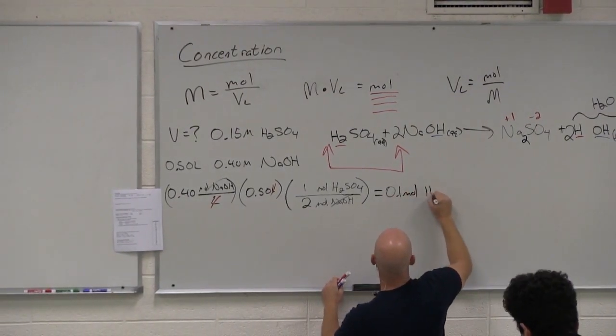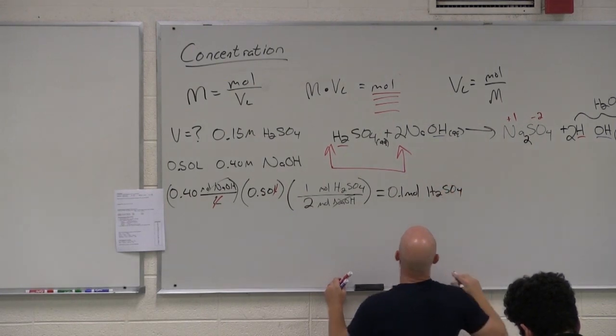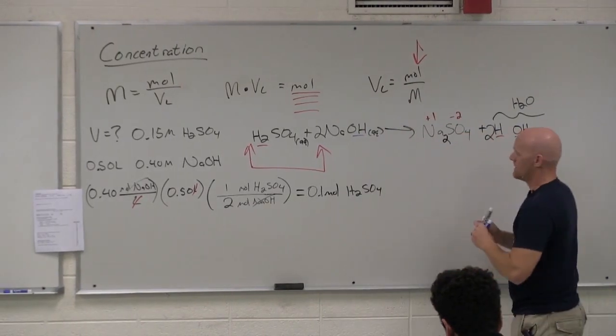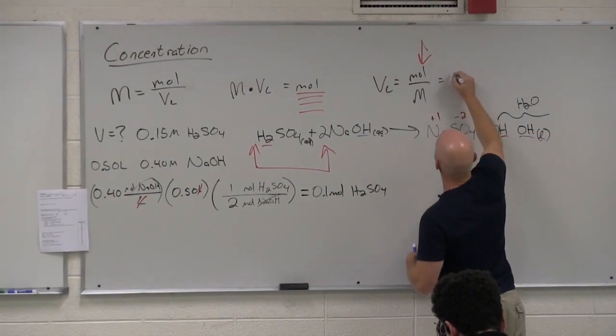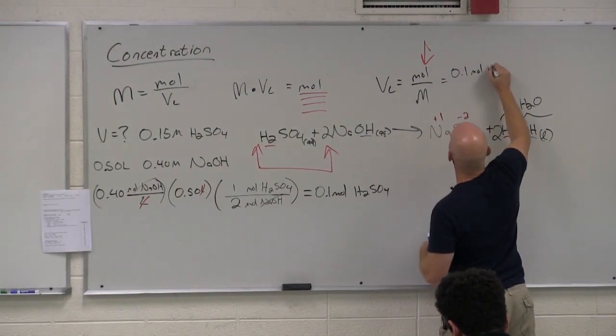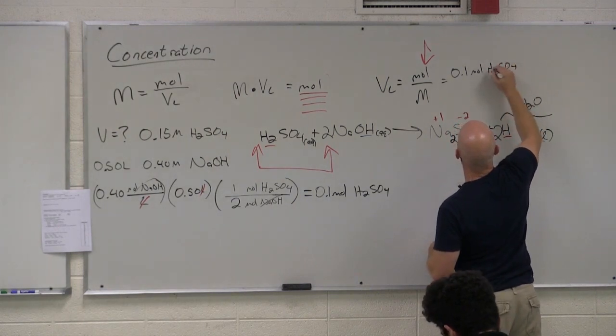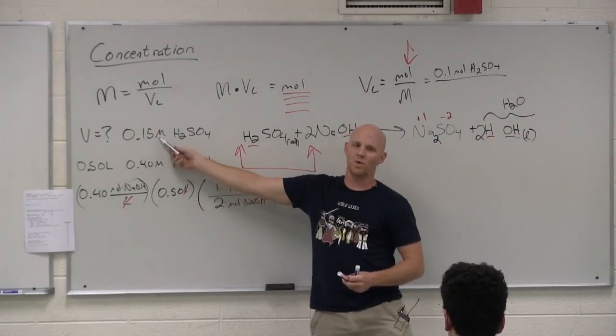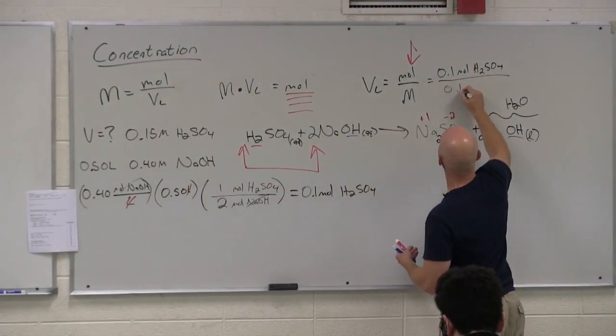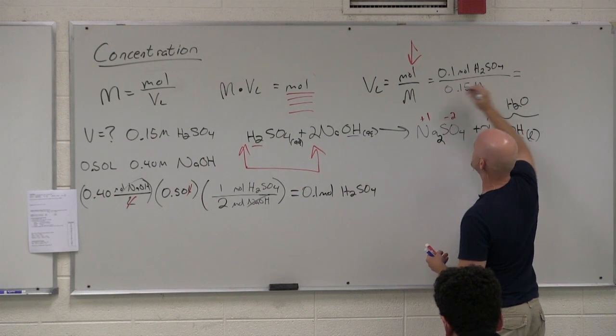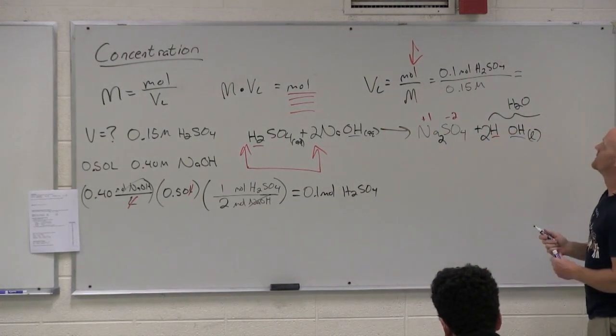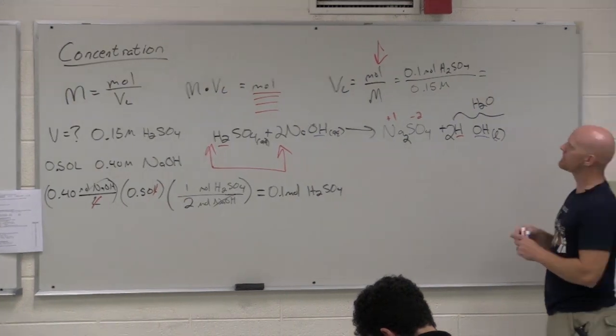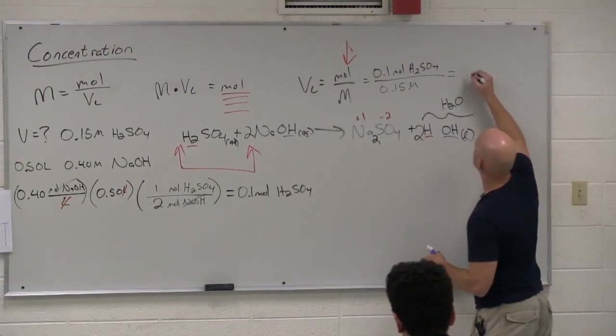So in this case, what was 0.5 times 0.4 again? 0.2. 0.2. What's 0.2 divided by 2? 0.1. 0.1 moles of H2SO4. And finally, we're going to plug that right back in here. We've got 0.1 moles of H2SO4. And how many? What's the molarity, I should say? Molarity divide as 0.15 molar. And that should get us the volume in liters of H2SO4. What is 0.1 over 0.15? 0.66667. Cool.